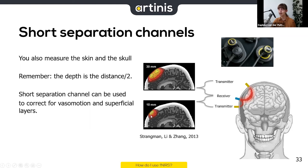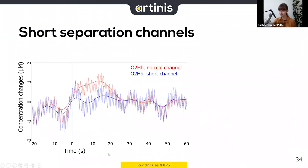We can use this shorter channel to correct for signals from superficial layers. In this graph — time on the x-axis, concentration changes on the y-axis — we see in red oxyhemoglobin from a normal 30mm channel and from a short 10mm channel. At stimulus onset, both increase, but more so for the normal channel. You can systematically subtract the signals from each other.